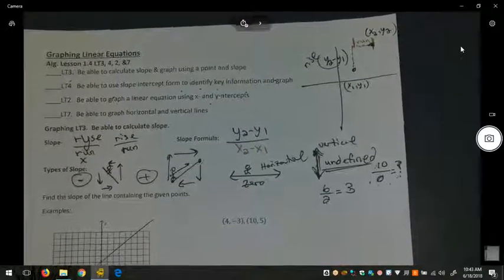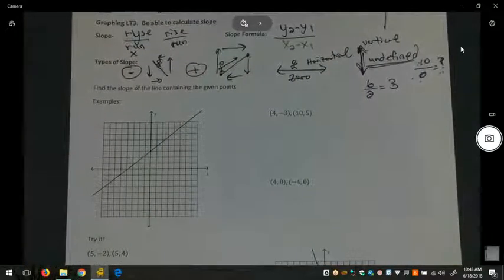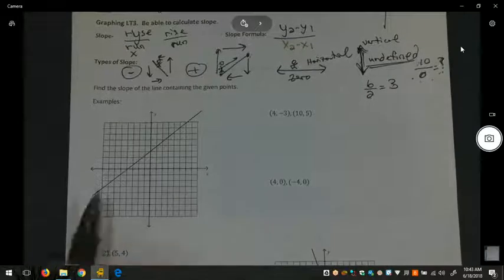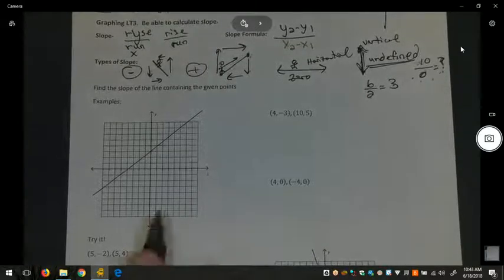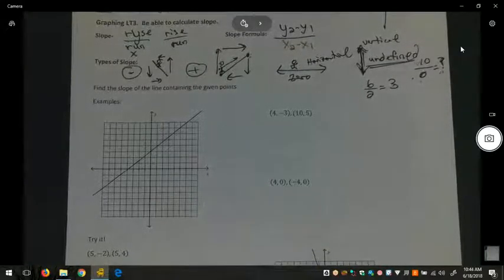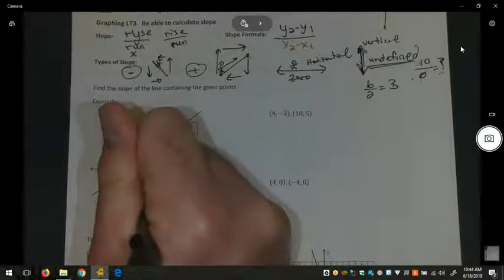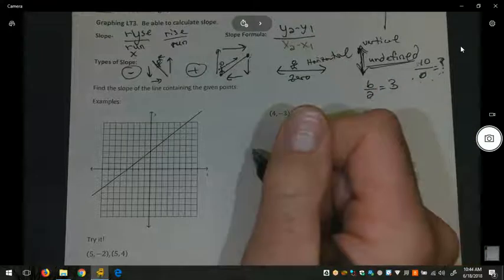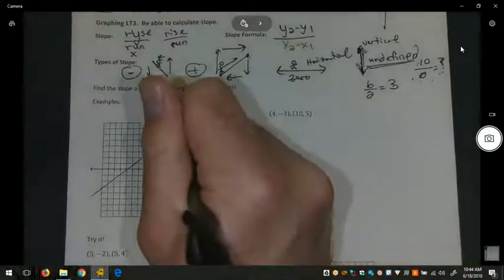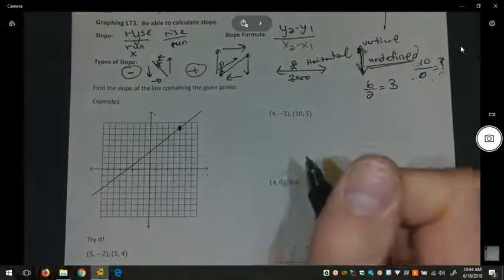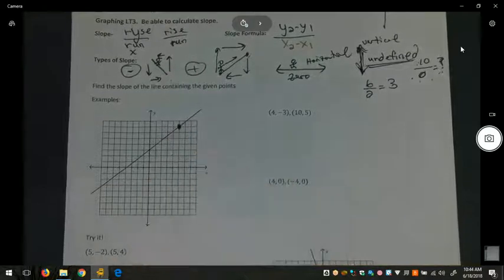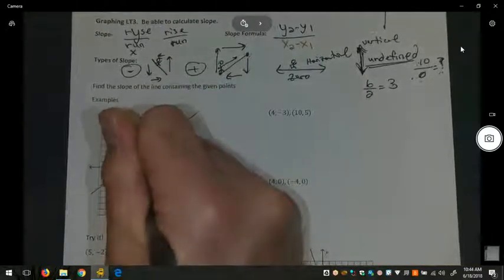Here are some examples. In our first example, we are given a graph. Now we have to find exactly where it crosses to make sure that our graph is going to be accurate. It looks like it crosses here, but not exactly. It also looks like it crosses here.